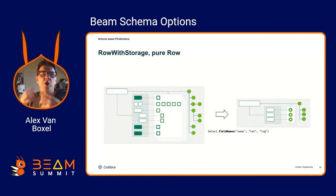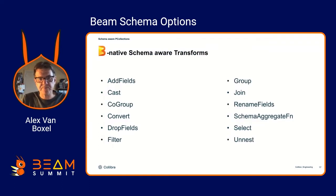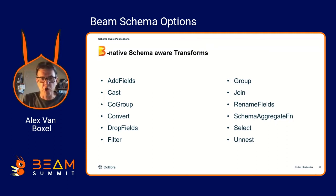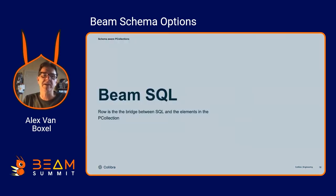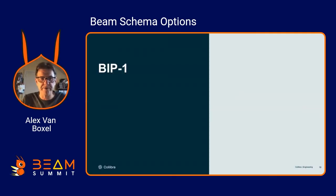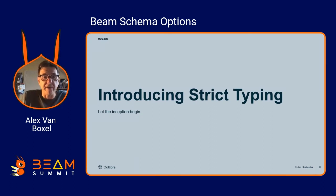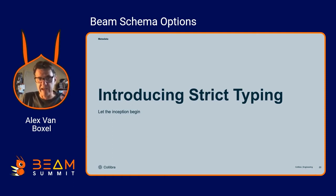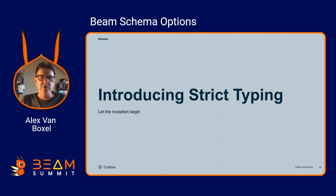With destructive operations, you get a Row as a universal container of your data. Out of the box you get transforms like add fields, casting, co-groups, renaming fields, and so on. What it really brings is BeamSQL. Having the row type and name is enough to make BeamSQL work. But I wanted those extra bits of information — that's why BIP-1 was introduced: to add a type system for options or annotations in Beam.